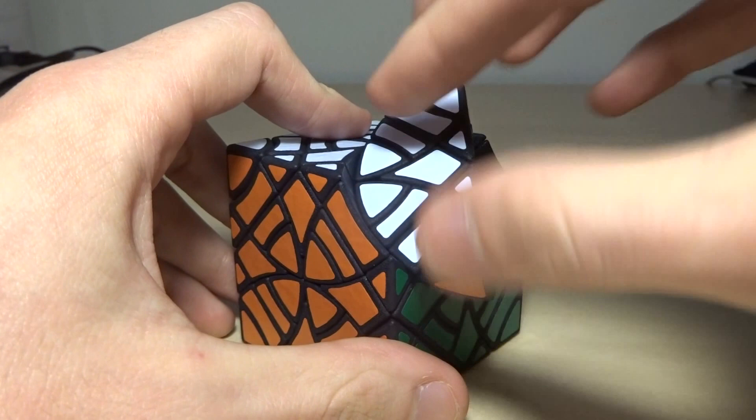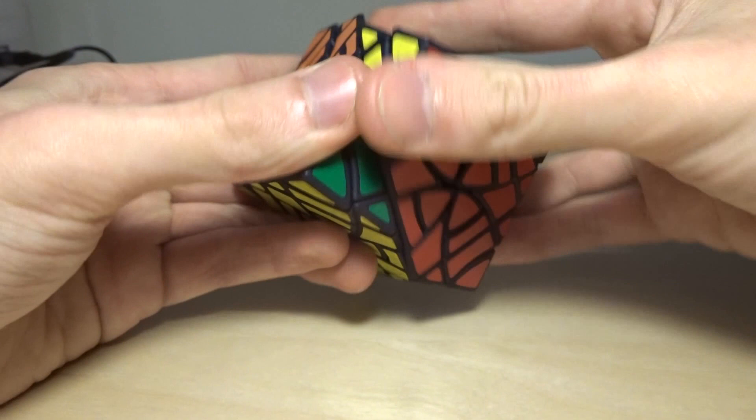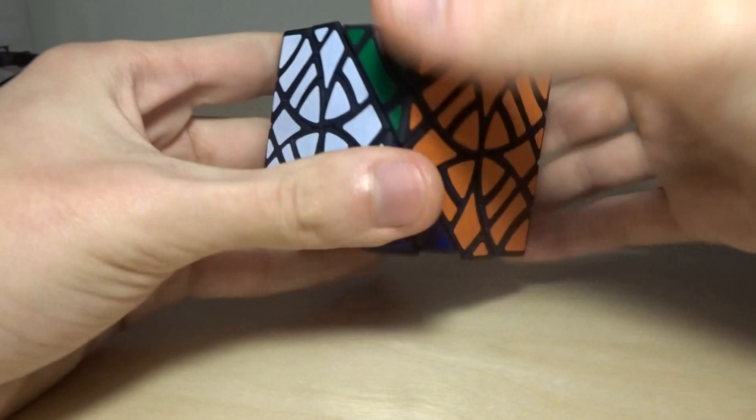This puzzle turns amazingly well, as you can see. The Curvy Copter axes just turn with a single finger. And the SCUBY axes also turn amazingly well. And this is true for every axis.